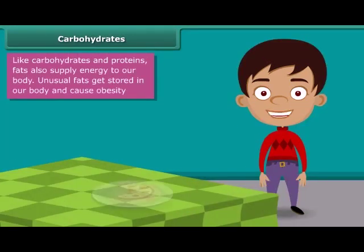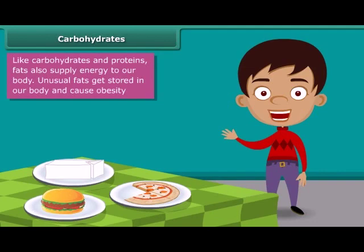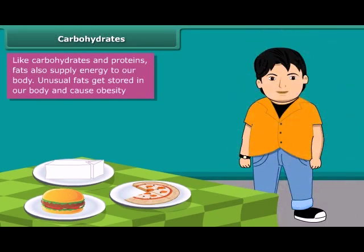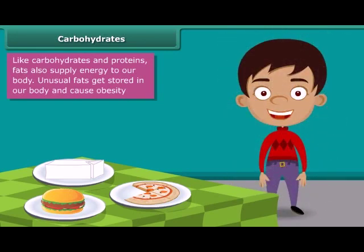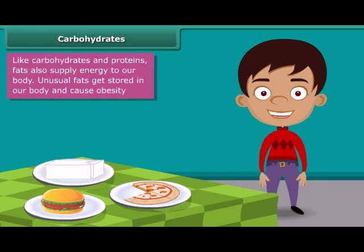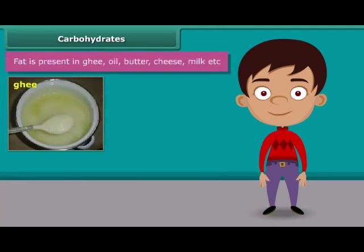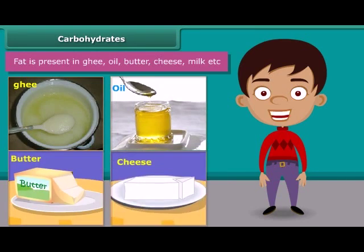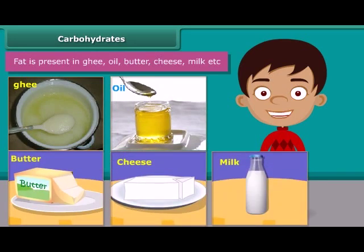I know that you all love pizza, burger, cheese, etc. But your parents do not allow you to eat them regularly because such foods contain large amounts of fat. Fat supplies us with energy. If we don't use up this energy, our bodies build up a store for future use in the form of body fat. This is the reason why people eating much oily food become obese. Ghee, oil, butter, cheese and milk are some main sources of fats.